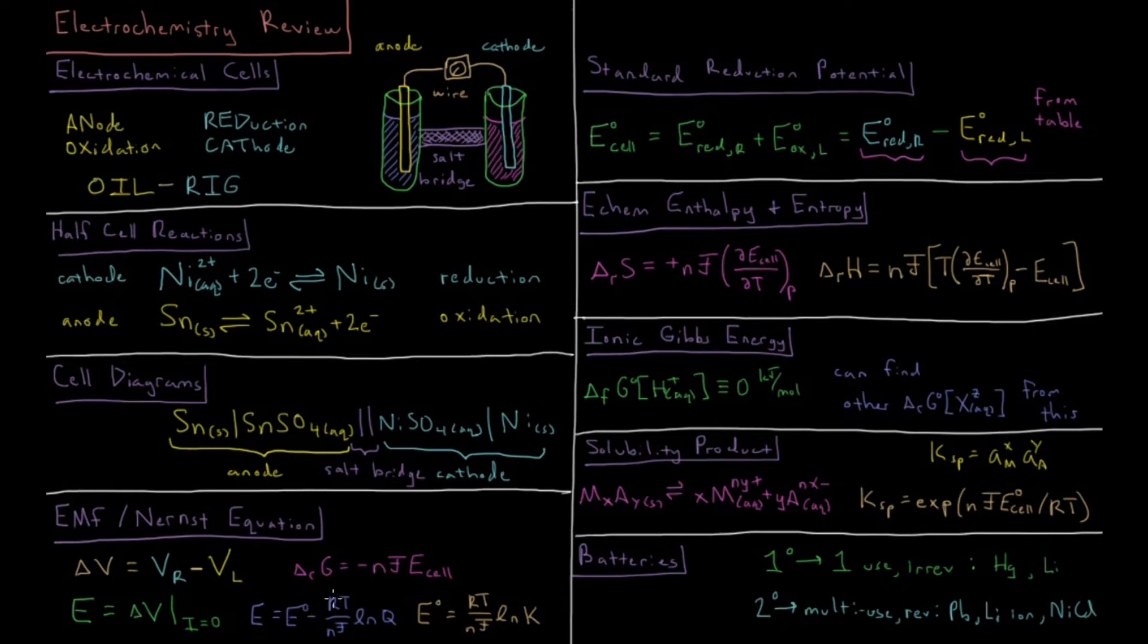The EMF of the cell is equal to the standard EMF minus RT over NF times the natural log of the reaction quotient. The standard EMF of the cell is equal to RT over number of moles of electrons transferred times Faraday's constant times the natural log of the equilibrium constant.